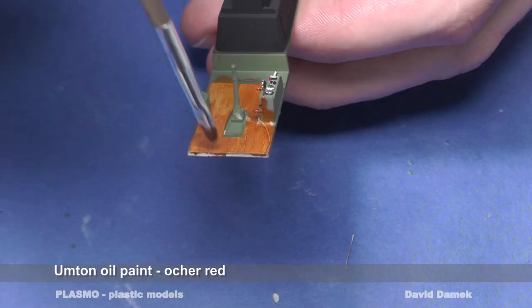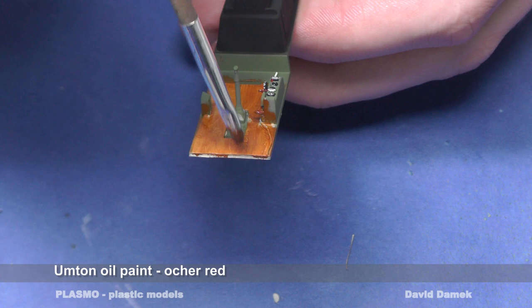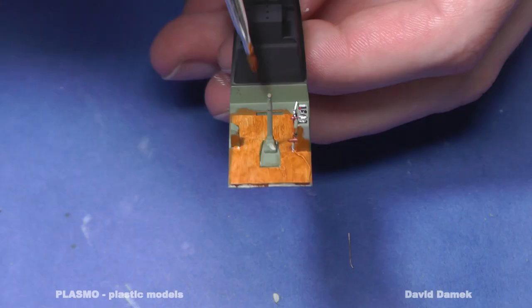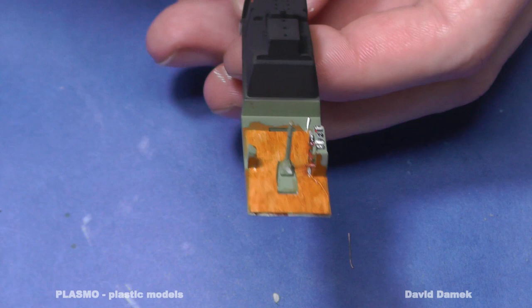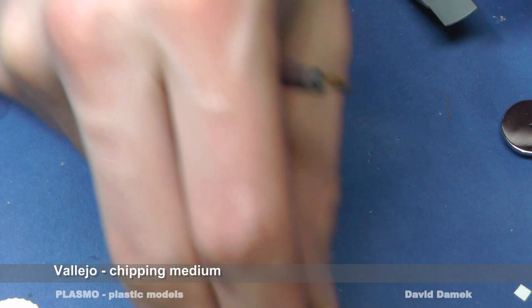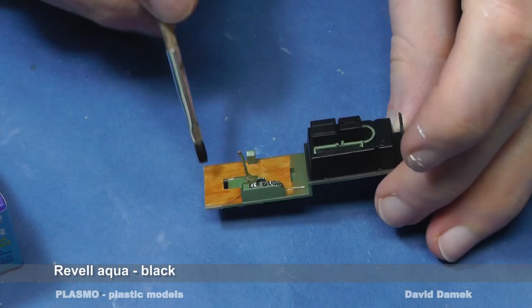I imitate the wood with umber oil paint and let it dry for two days. You can see that I have accidentally painted some green parts too, but I can easily clean the paint with a cotton swab. I applied a thin layer of Vallejo chipping medium on the wood with a paintbrush. Then I paint the rubber with black acrylic color.